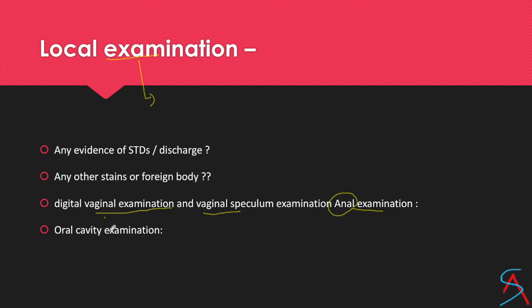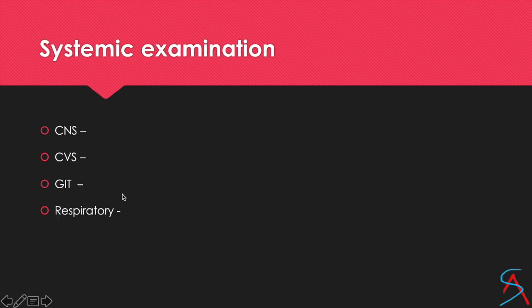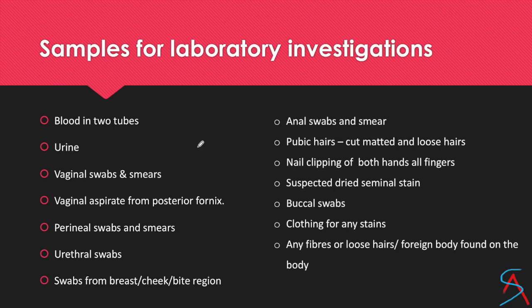Examine the oral cavity for any signs of buccal coitus. You have to do a systemic examination of the CNS, cardiovascular, GIT, and respiratory systems. Samples need to be collected simultaneously while you are doing inspection or palpation, but you can mention them separately in your report.